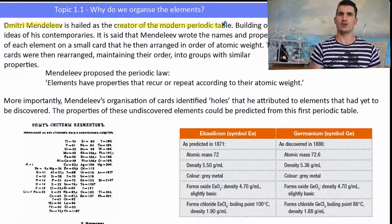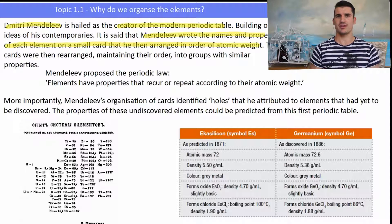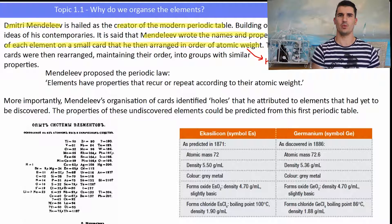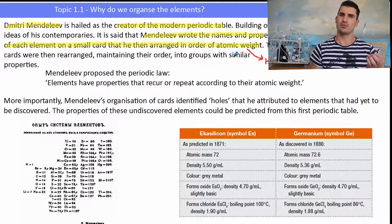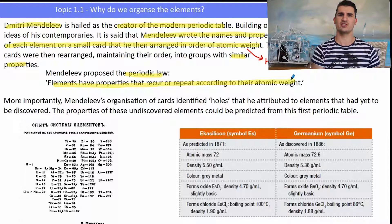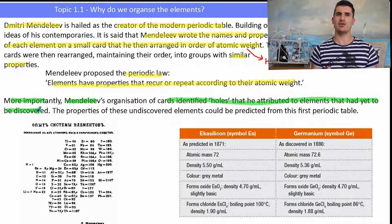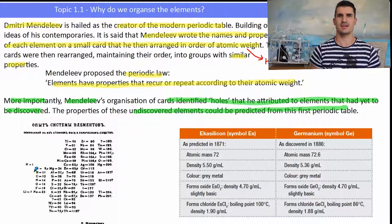Dmitri Mendeleev built on the knowledge from Lavoisier and Döbereiner and began to put this jigsaw together. He wrote the names and symbols of all the elements he had on cards and tried to order them by atomic weight — essentially how heavy the elements are, determined by the number of protons and neutrons. He proposed what is known as the periodic law: elements have properties that reoccur or repeat according to their atomic weight. He noticed a pattern where chemical and physical properties would repeat. Crucially, he also left holes in the periodic table, because at the time not all elements had been discovered.